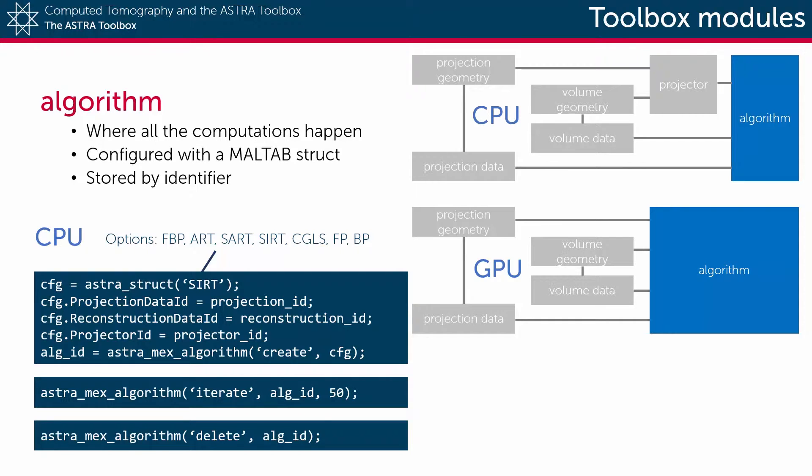ProjectionDataId and ReconstructionDataId provide the links to the projection and volume data objects that are stored in the ASTRA memory, and ProjectorId provides the link to the projector object that should have been configured beforehand.